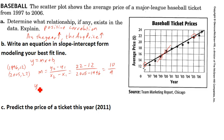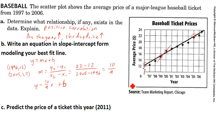So y equals (10/9)x plus b. Now we need the y-intercept. You have to be careful here because it looks like we have the y-intercept on the graph, but that's not really the y-intercept. Remember, the y-intercept is when the x value is 0. The x value here is 1996, not 0, so this is not our y-intercept — our y-intercept is way off to the left.